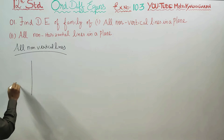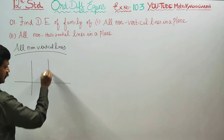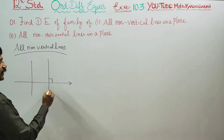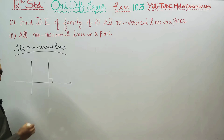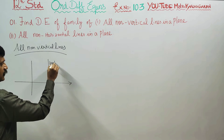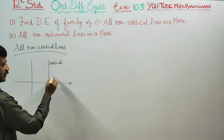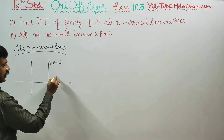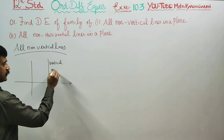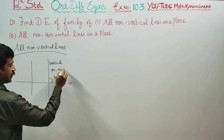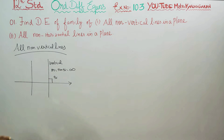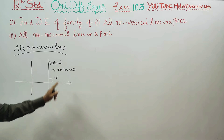Here, on the x-axis and y-axis, a line perpendicular to the x-axis is called a vertical line. A vertical line makes an angle of 90 degrees. So the slope m is equal to tan theta, which is tan 90, and tan 90 is infinity. So a vertical line has a slope of infinity.